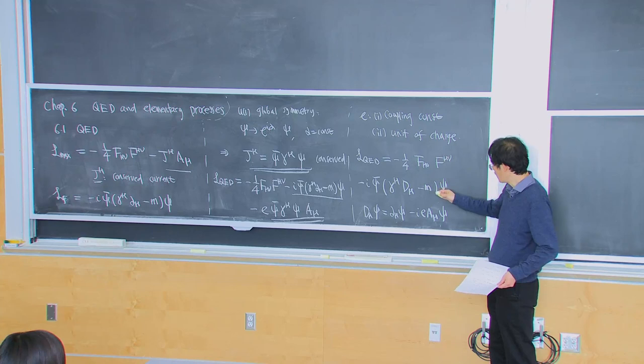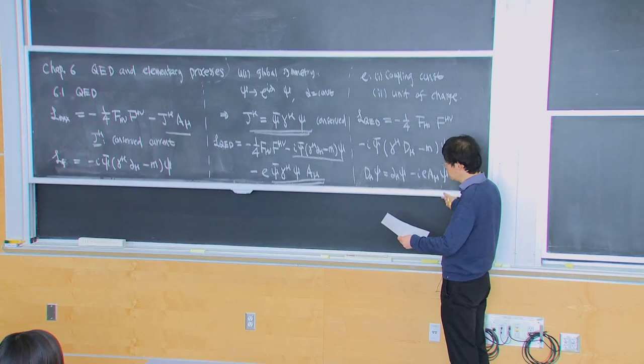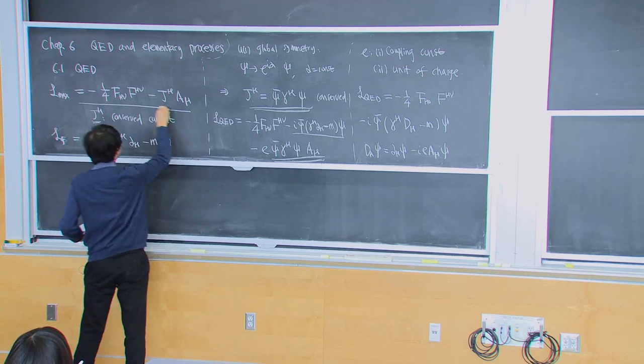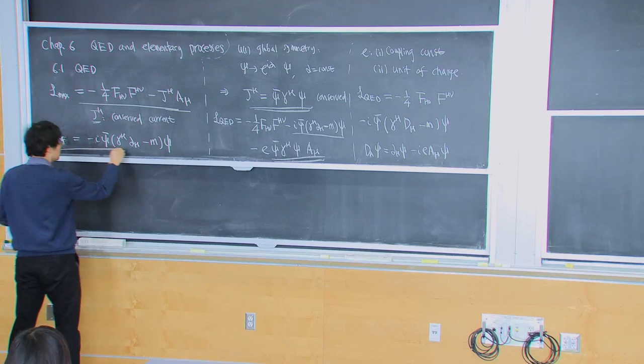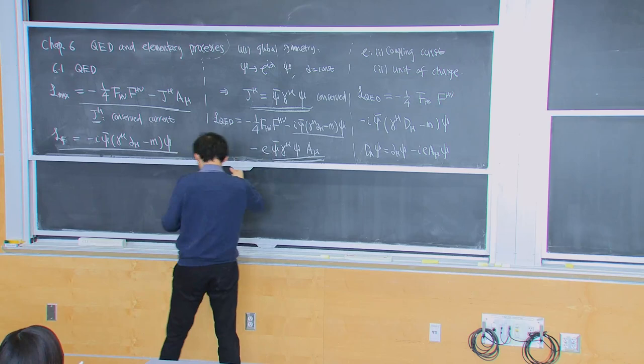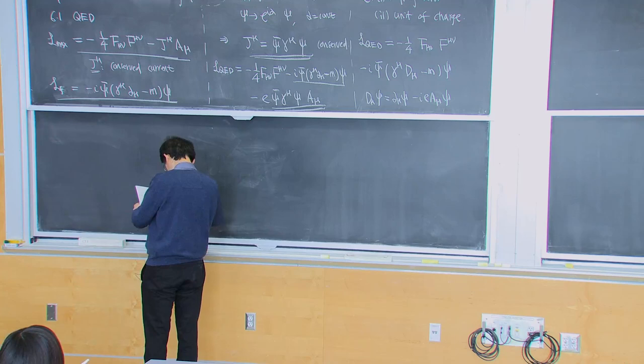But writing it this way makes one new property of the theory manifest. We know this theory has a gauge symmetry, but the free fermion theory only has a global symmetry — alpha must be a constant. Now when we combine them together, it turns out this new Lagrangian actually has a generalized gauge symmetry.